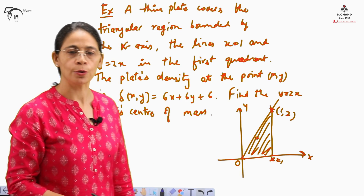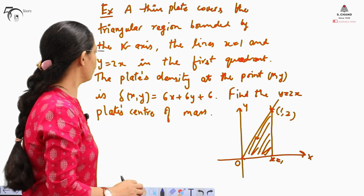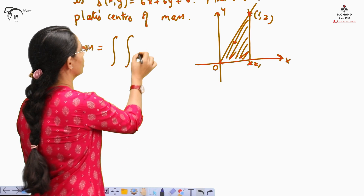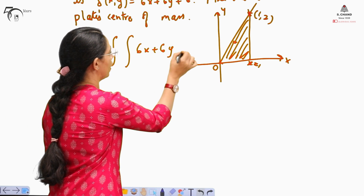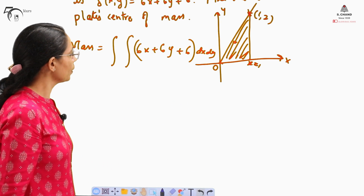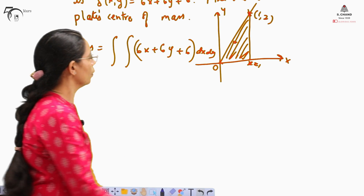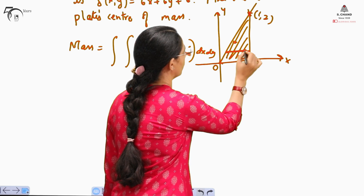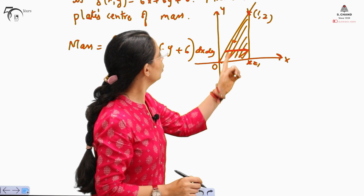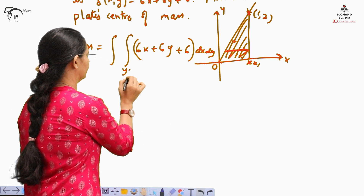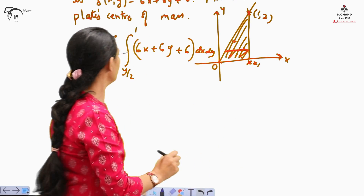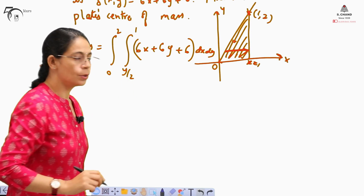To find out the center of mass, we need to find out the mass first. Mass will be calculated by taking these limits for the density function 6x + 6y + 6, and integration needs to be taken with respect to x and y respectively. We need to find out the limits for x. We can take a strip either parallel to the x-axis or parallel to the y-axis. If we take parallel to the x-axis, it is moving from x equal to y/2 to x equal to 1, and y is moving from 0 to 2.